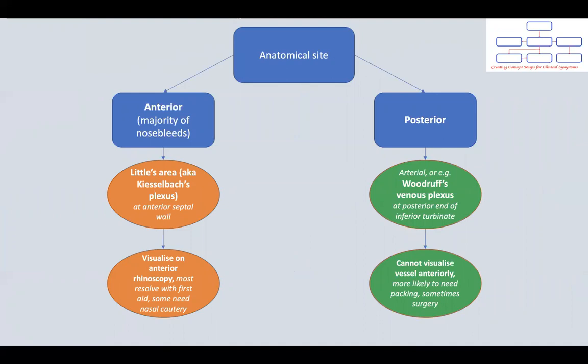Anatomically, we can consider nosebleeds as originating anteriorly or posteriorly within the nose. The nasal mucosa itself is highly vascularised due to its role in humidifying and warming the air we breathe. It is supplied by both the internal and external carotid arteries.